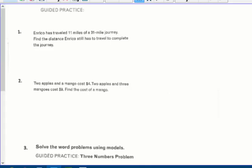So guided practice. I'm going to work some of these for you. Enrico has traveled 11 miles on a 31 mile journey. Find the distance Enrico still has to travel to complete the journey. So you could do it horizontally and say, oh, 11. Well, I know the other part's going to be way bigger. So I'm going to draw 11 proportionally. Okay. This is my 11.